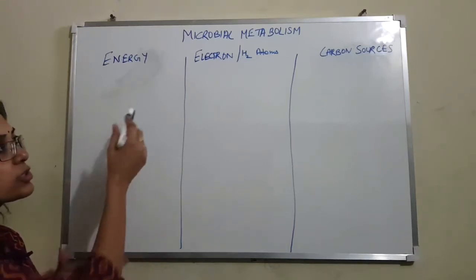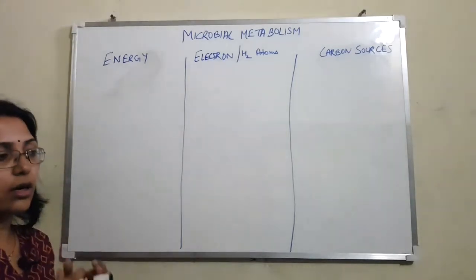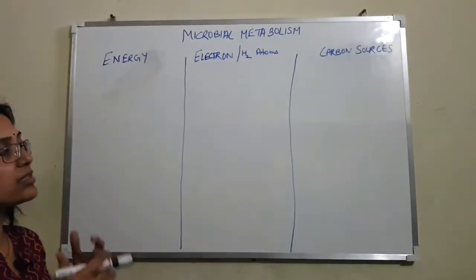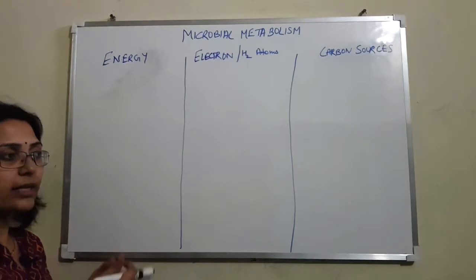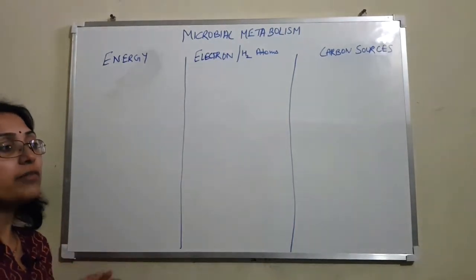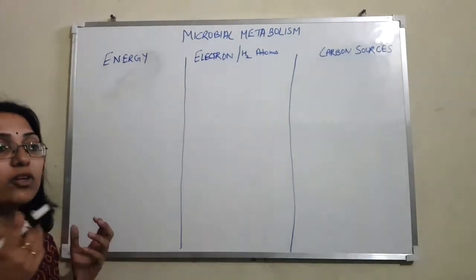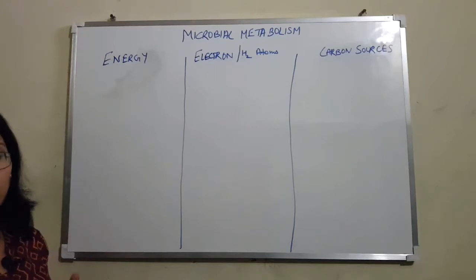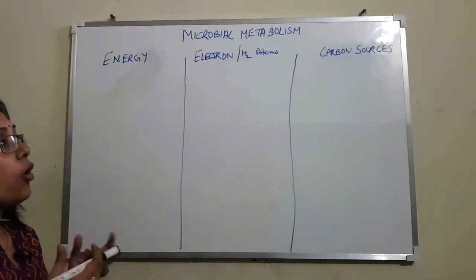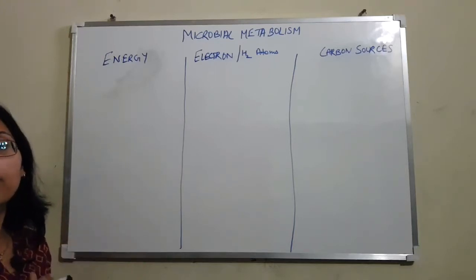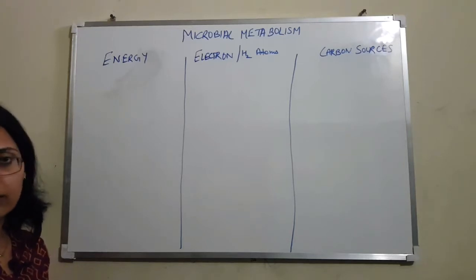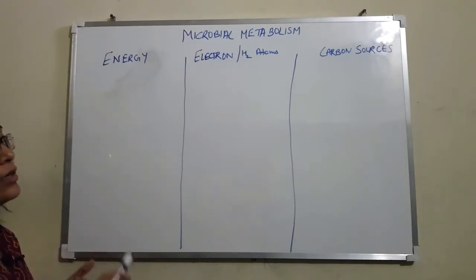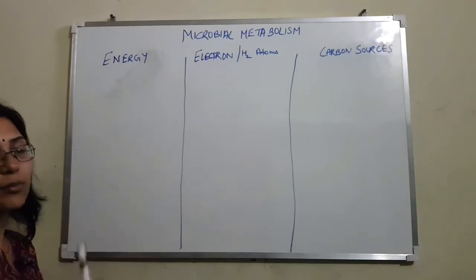Also, what kind of energy or carbon sources a particular microorganism is obtaining and utilizing will determine what kind of environment they are going to live in, what is their ecological niche, how they are going to be useful in industry, what are their industrial applications, or how they are significant in biogeochemical cycles. All of that is determined by how they obtain and utilize their energy and carbon sources.